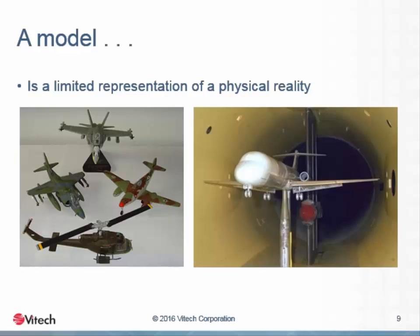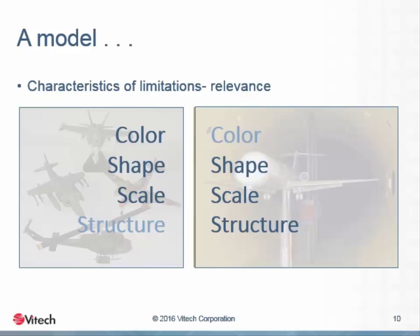The critical factor in delineating the relevance of particular limitations in the model's representation of reality is the purpose of the model. The value of the model as a representation of reality is directly related to its purpose. Just as a plastic model constructed using rubber cement would be worthless in a wind tunnel test, a much larger scale wind tunnel model painted gunmetal gray would be out of place as a desktop display model. The value of the model is determined by the degree to which it fulfills its purpose.